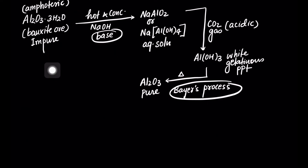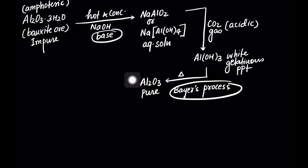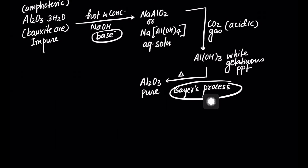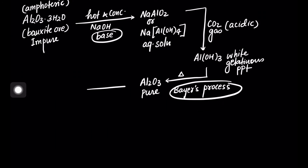When we heat it further, we'll get pure alumina, that is Al2O3. So from impure bauxite ore to the production of pure alumina, the whole process is known as Bayer's process. After that, we have the Hall-Héroult process.